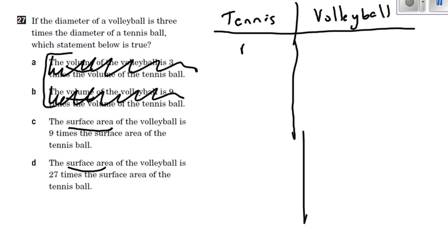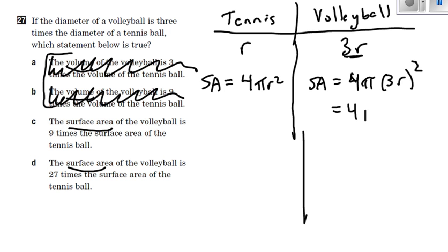Surface area. Tennis ball, radius r, surface area is 4 pi r squared. Now, the volleyball is triple the radius. So the surface area is 4 pi radius squared. And don't forget, this time the radius is 3r. So that squared, 3 times 3 is 9, and r times r is r squared. So 4 pi 9 r squared. So let's take that 9, move it out front. 9 times 4 pi r squared.